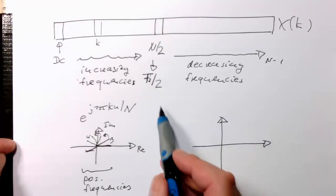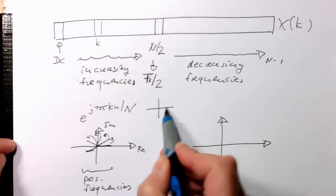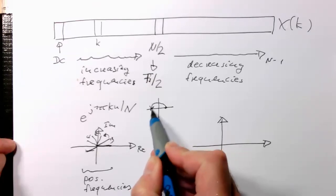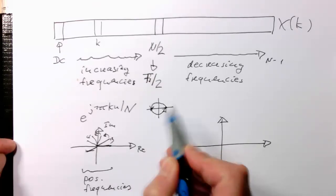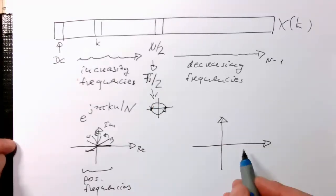Remember in the middle here, we had this condition where we've got only these two points. This happened at Fs/2. Now here at this point, the k is getting higher.